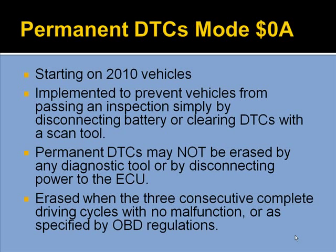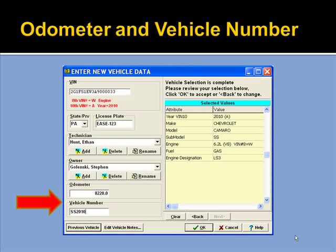Starting in 2010, there's a new DTC mode. This was implemented to prevent vehicles from passing an inspection simply by disconnecting the battery or clearing DTCs with a scan tool. There are permanent DTCs, meaning they cannot be erased by a diagnostic tool or by disconnecting power. They're erased only when three consecutive complete driving cycles with no malfunction, or as specified by OBD regulations. That's a quick overview — that'll give you a good idea of why we had to add these to the scan tool and they're now supported. A lot of you have also wanted to track odometers and vehicle numbers per vehicle — that's in this version and you can start doing that right away with version 10.